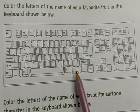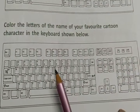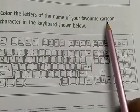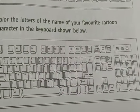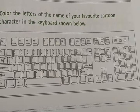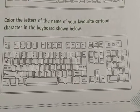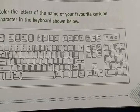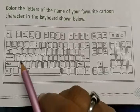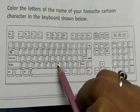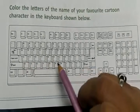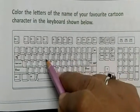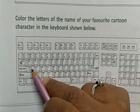Color the letters of the name of your favorite cartoon character. Your favorite cartoon character — in the keyboard you have to look at it and color it. For example, my favorite cartoon character's name is Shinchan, so I have to look at it: S, I, N, C, H, A, N. Or Doraemon — D, O, R, A, E, M, O, N.